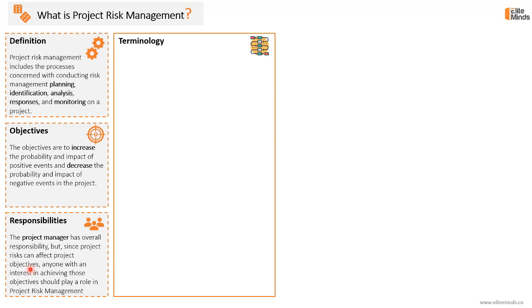Now, when it comes to terminology used in project risk management, starting with risk itself — what is a risk? A risk is an uncertain event or condition that, if it occurs, has a positive or negative effect on a project objective. We are not sure if this event will occur; it's uncertain — it might happen, it might not. But if it does occur, it will have a positive or negative impact on at least one project objective, such as delaying the project, costing extra budget, or affecting project quality.